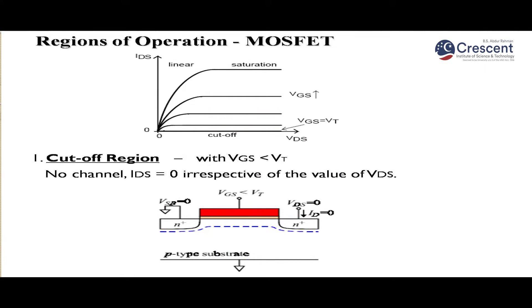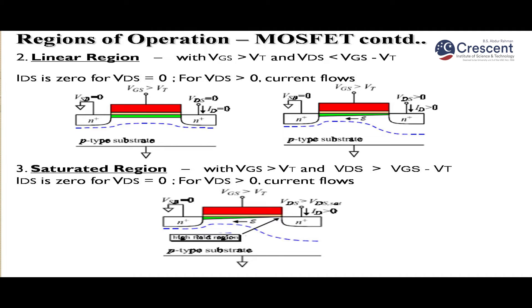There are three regions of operation of the MOSFET: cutoff region, linear region, and saturation region, determined by the gate-to-source voltage and drain-to-source voltage. In the cutoff region, the gate voltage is less than the threshold voltage, so no channel is formed and the drain current is equal to zero.